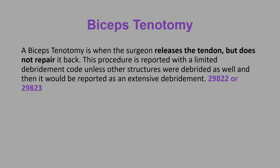Biceps tendinotomy. A biceps tendinotomy is when a surgeon releases the tendon but does not repair it back. This procedure is reported with a limited debridement code unless other structures were debrided as well, in which case it would be reported with an extensive debridement. So for this procedure, you're picking between the two debridement codes: 29822 or 29823.